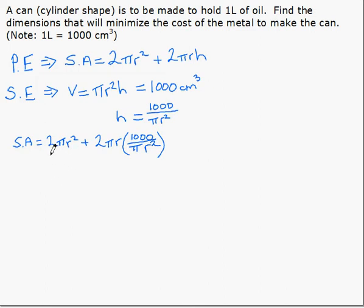Now, we only have one variable. We can simplify a little first and then take our derivative. So we simplify here. Really, all that we can do is cancel our r's here. We can also cancel π and make that 2,000 there. So the surface area becomes 2πr² plus 2,000r⁻¹.